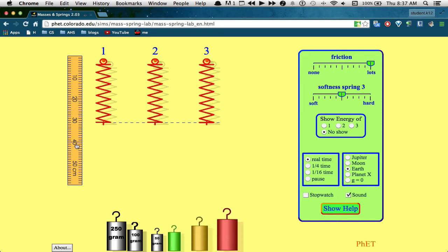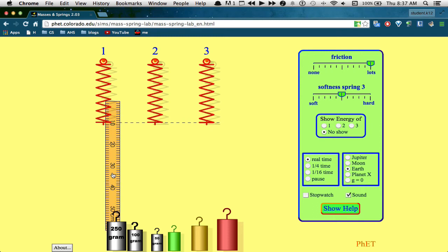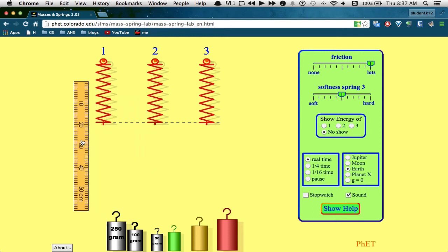The ruler is movable. This dotted line is called the equilibrium position. All your distances will be measured from that position. You can move the ruler however you need to in order to measure how far it stretches, just by dragging it around.